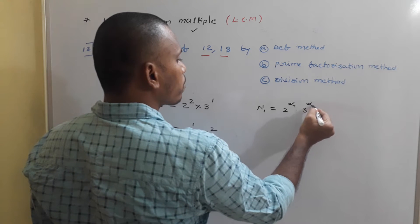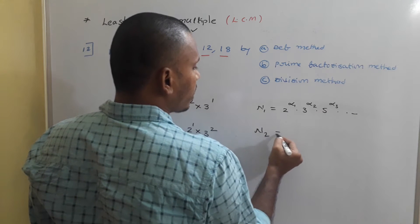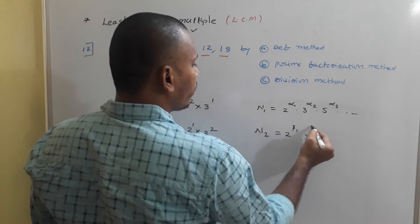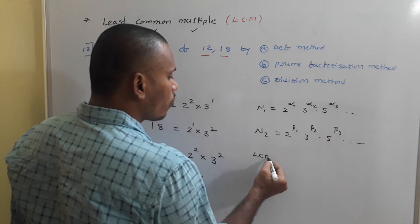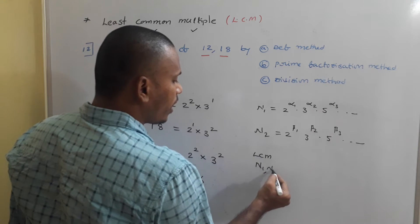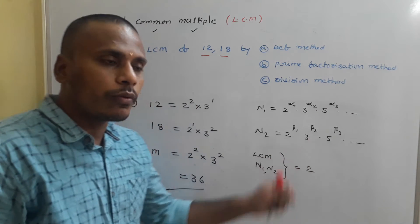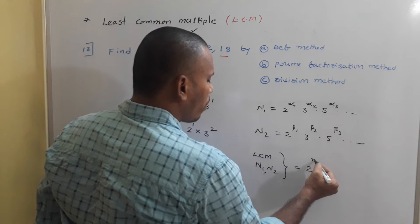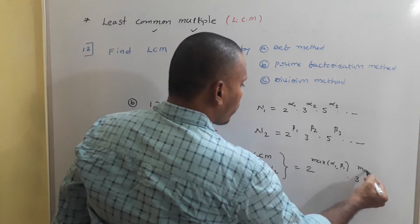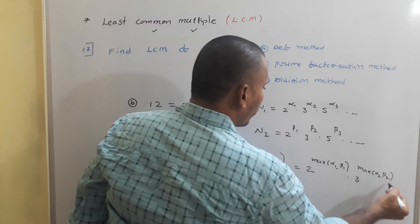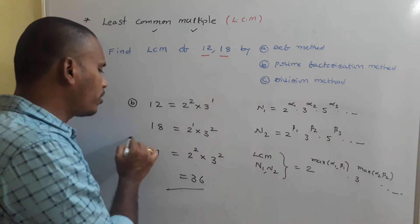In general, if n₁ = 2^α₁ × 3^α₂ × 5^α₃ × ... and n₂ = 2^β₁ × 3^β₂ × 5^β₃ × ..., then LCM(n₁, n₂) = 2^max(α₁,β₁) × 3^max(α₂,β₂) × ... and so on. With that logic, LCM here is 2² × 3² = 36.